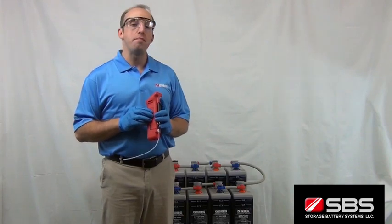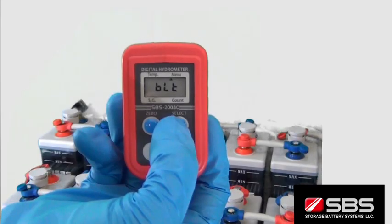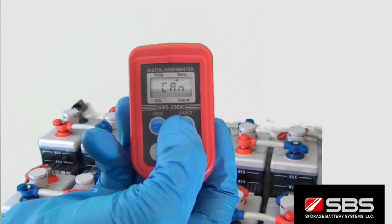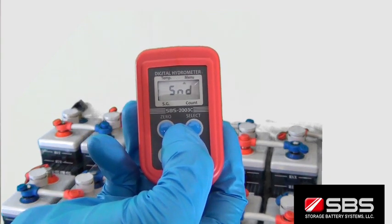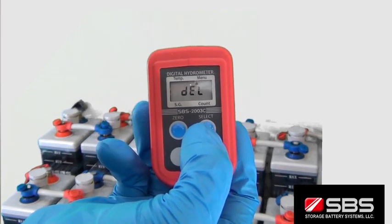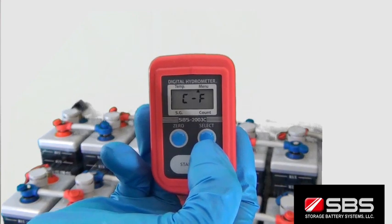The SBS 2003 includes a menu feature that allows you to delete the last reading recorded, transmit all the data via Bluetooth, delete all the stored data, and switch between Fahrenheit and Celsius.